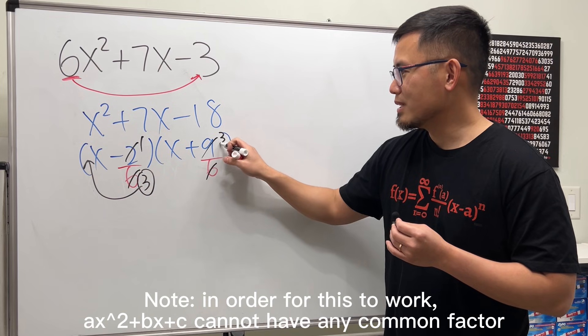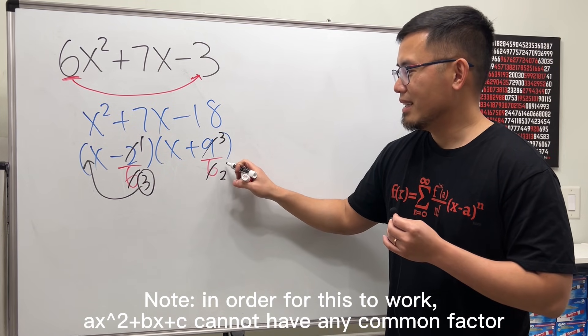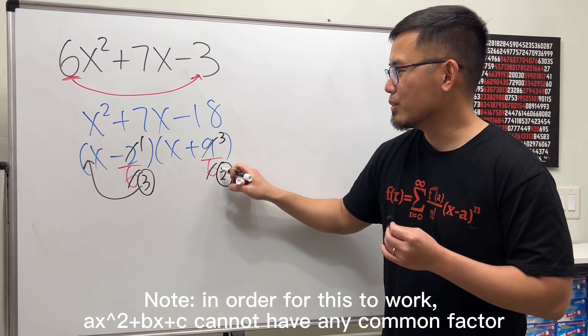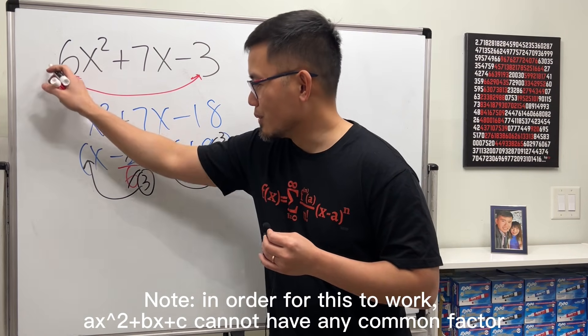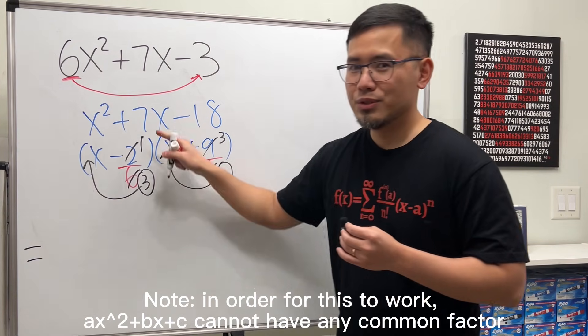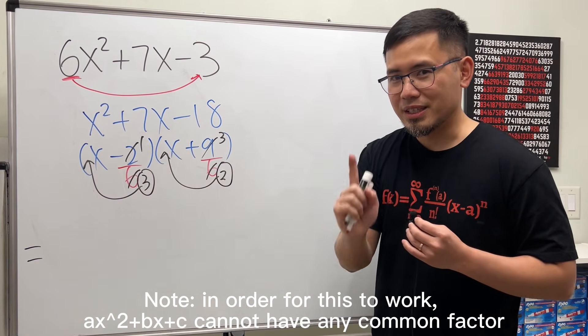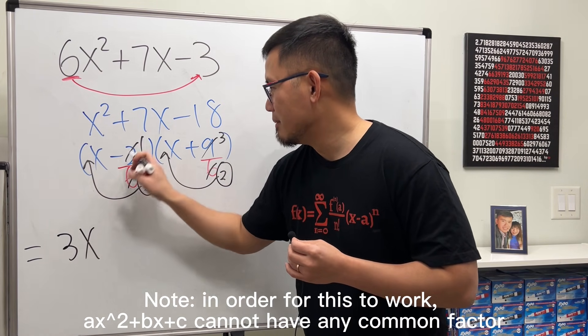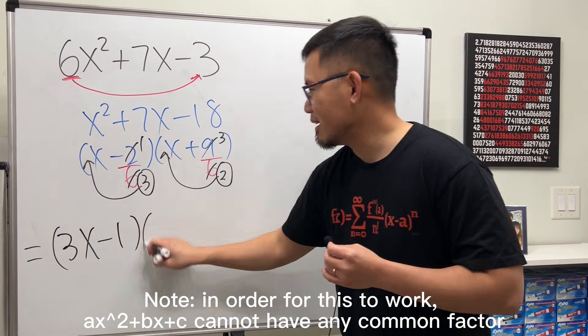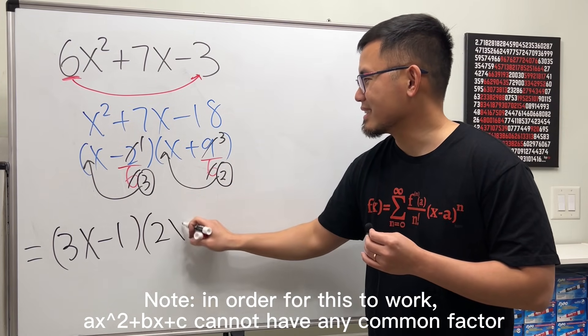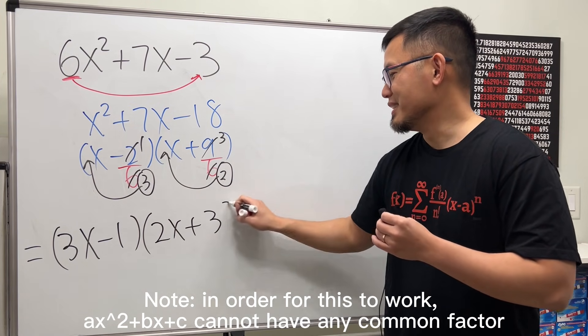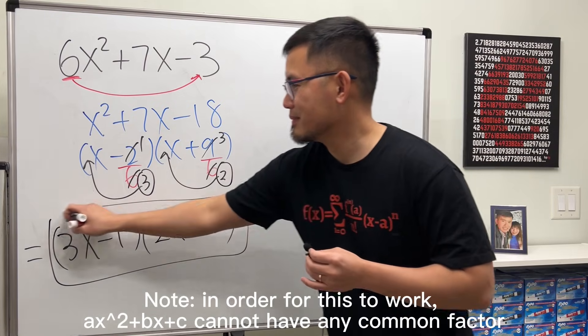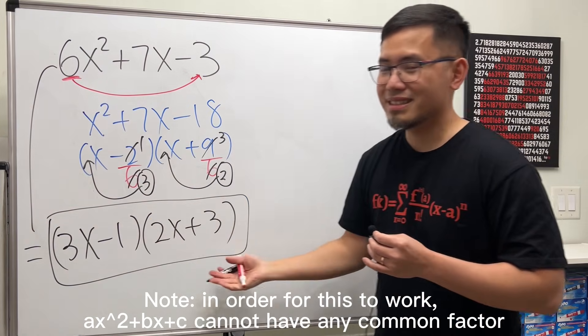Let's try this. 9 over 6, reduce that by 3, we get 3 over 2. And, then, we have the denominator. So, put the 2 right here. And, now, I'll tell you this right here. Just ignore the middle now because I can tell you the answer is 3x minus 1 times 2x plus 3. And this is equal to that. Done.